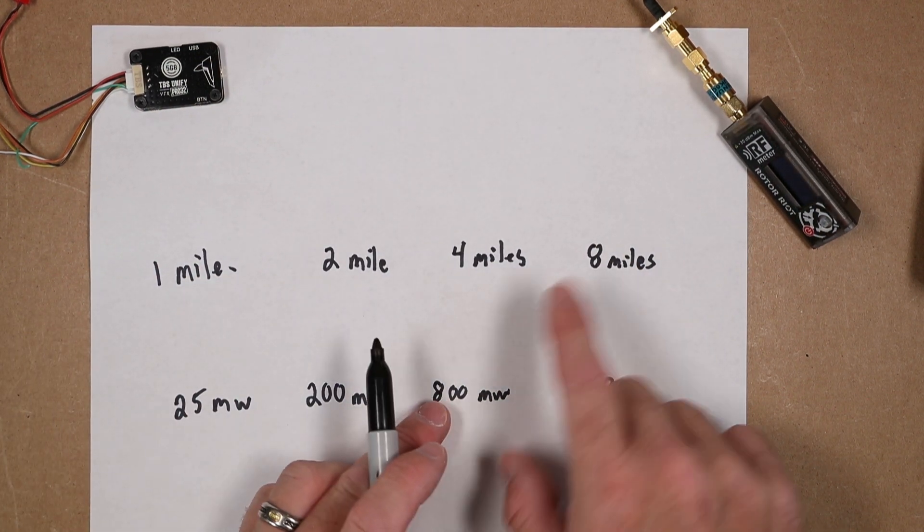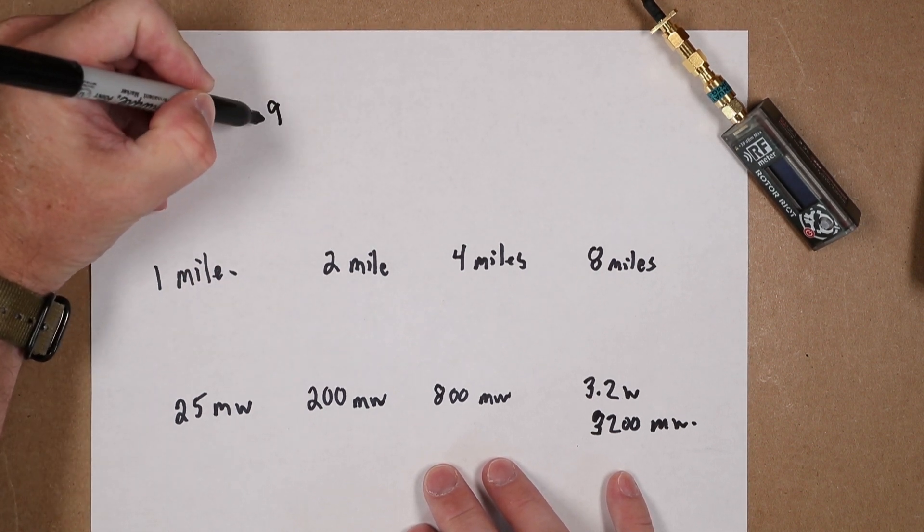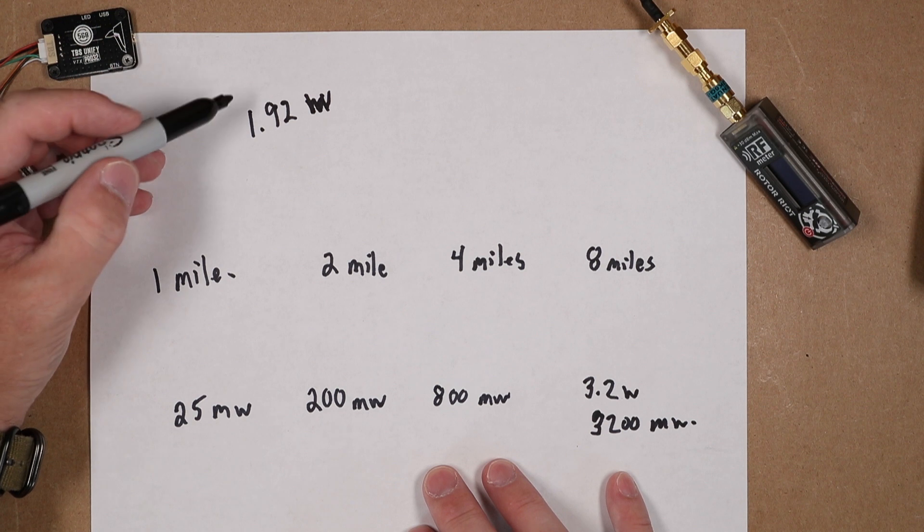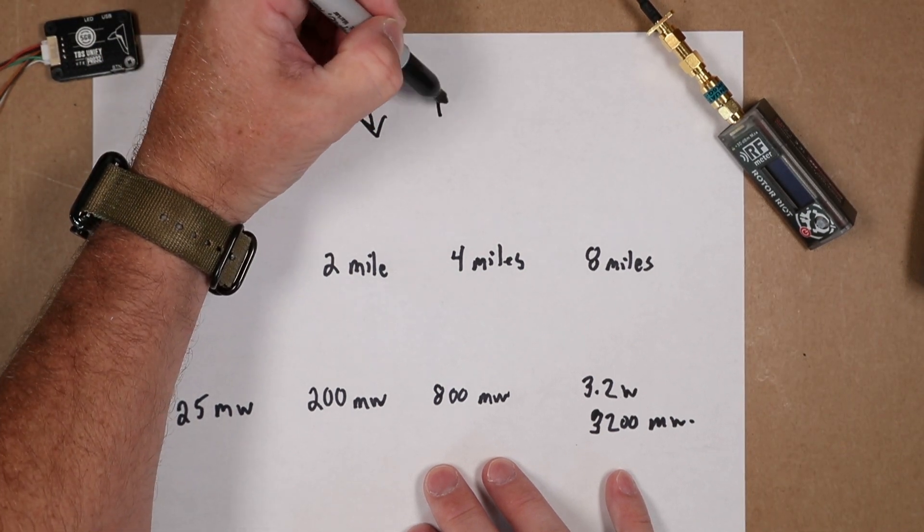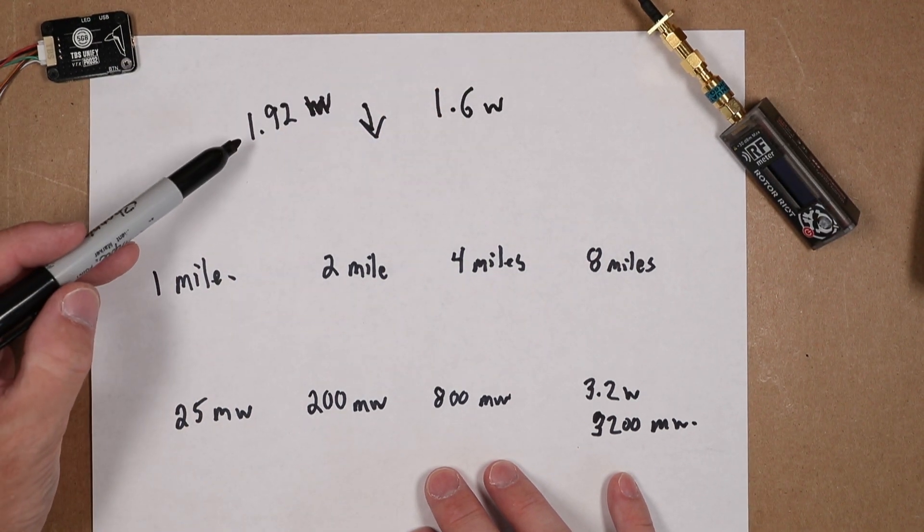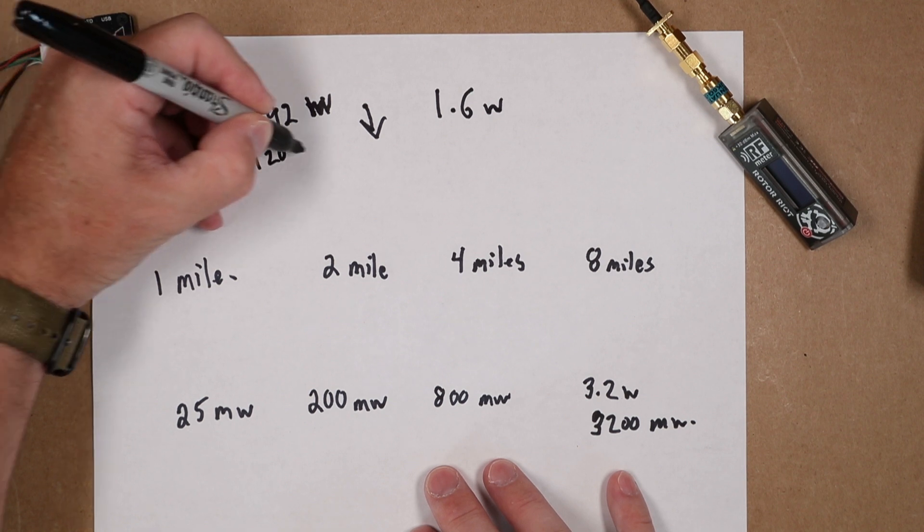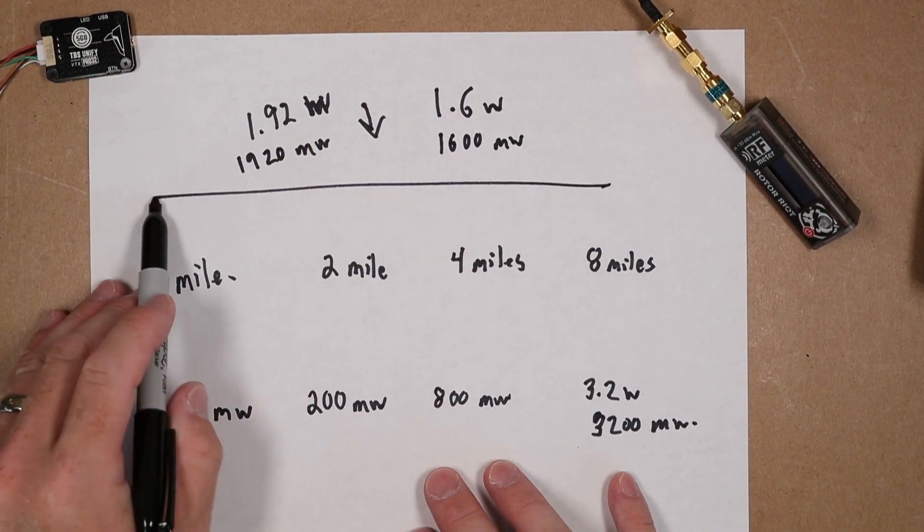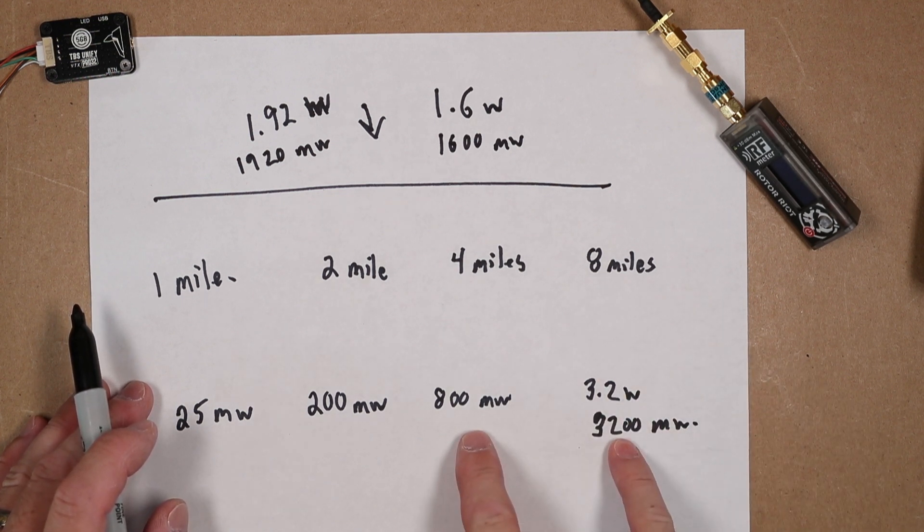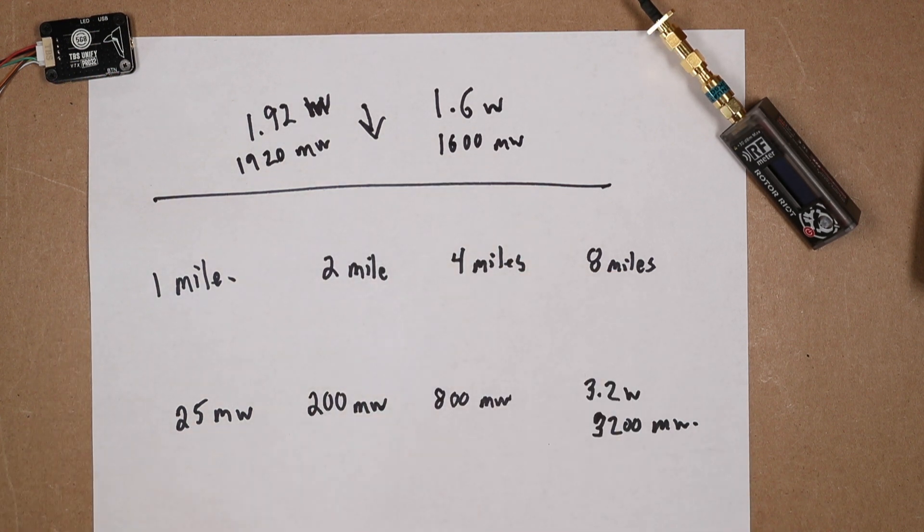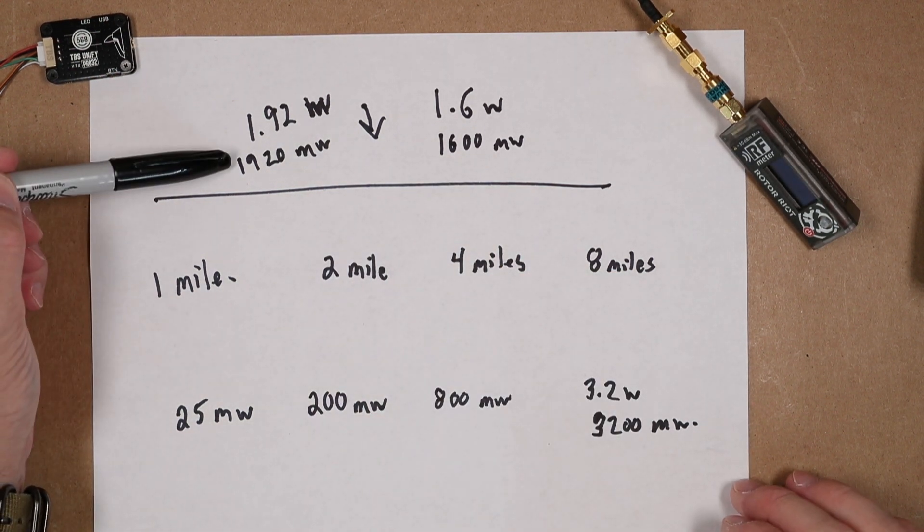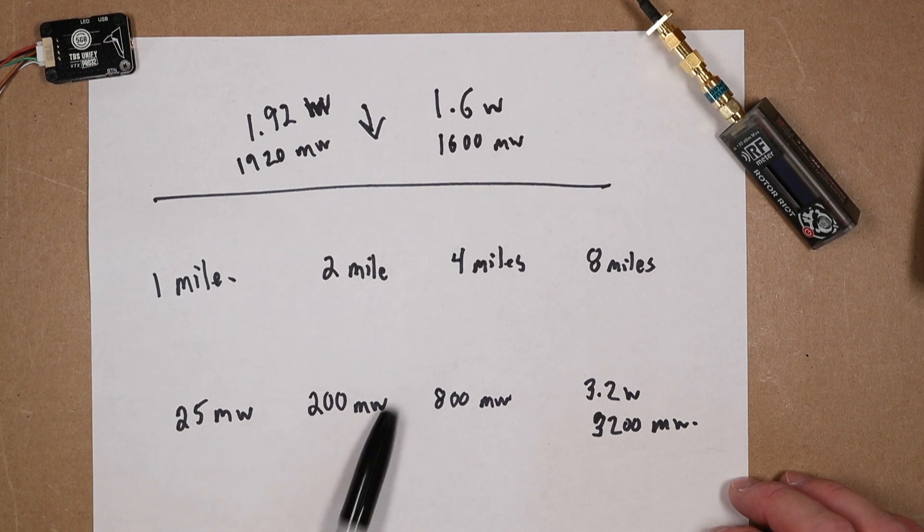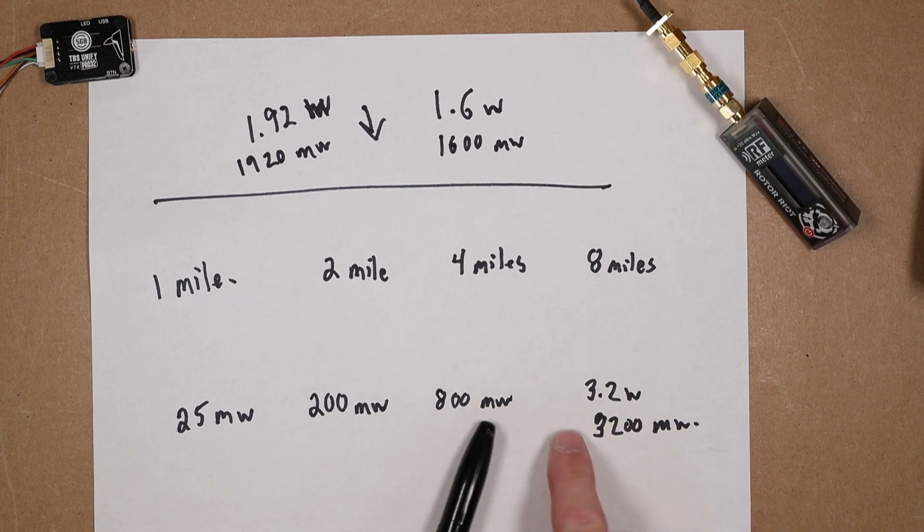You see why that little bit of a drop, they dropped this from 1.92 watts and they dropped it down to 1.6 watts or 1920 milliwatts to 1600 milliwatts. So I mean what's our range difference there? It's minuscule, we're talking 300 milliwatts.